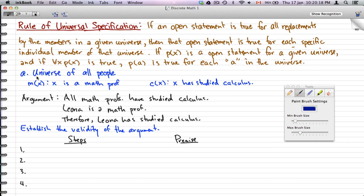To go through an example, let's assume that we have a universe of all people. Now, mx represents x as a math prof, and cx represents x has studied calculus.